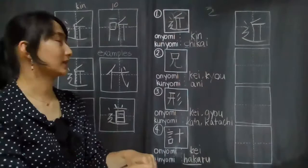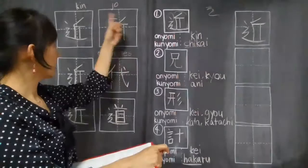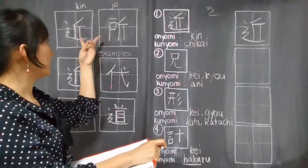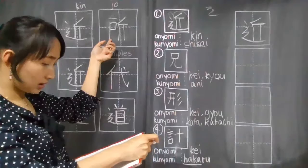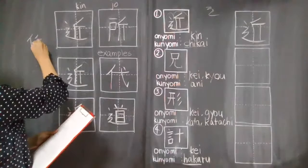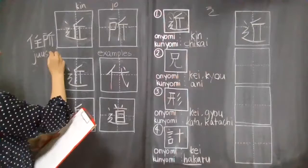And this kanji is the kanji for jusho, or address. So this refers to a place and then this one is chikai. Place, near place. So the meaning is neighborhood. The example that I'm going to give you for this kanji is jusho, address.